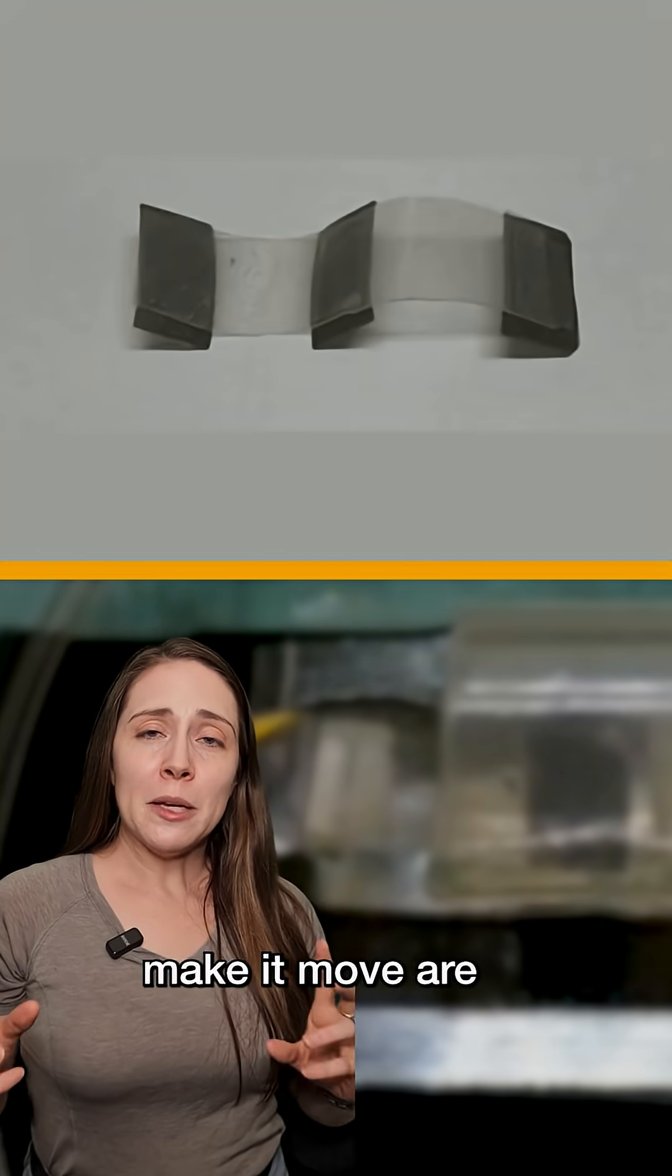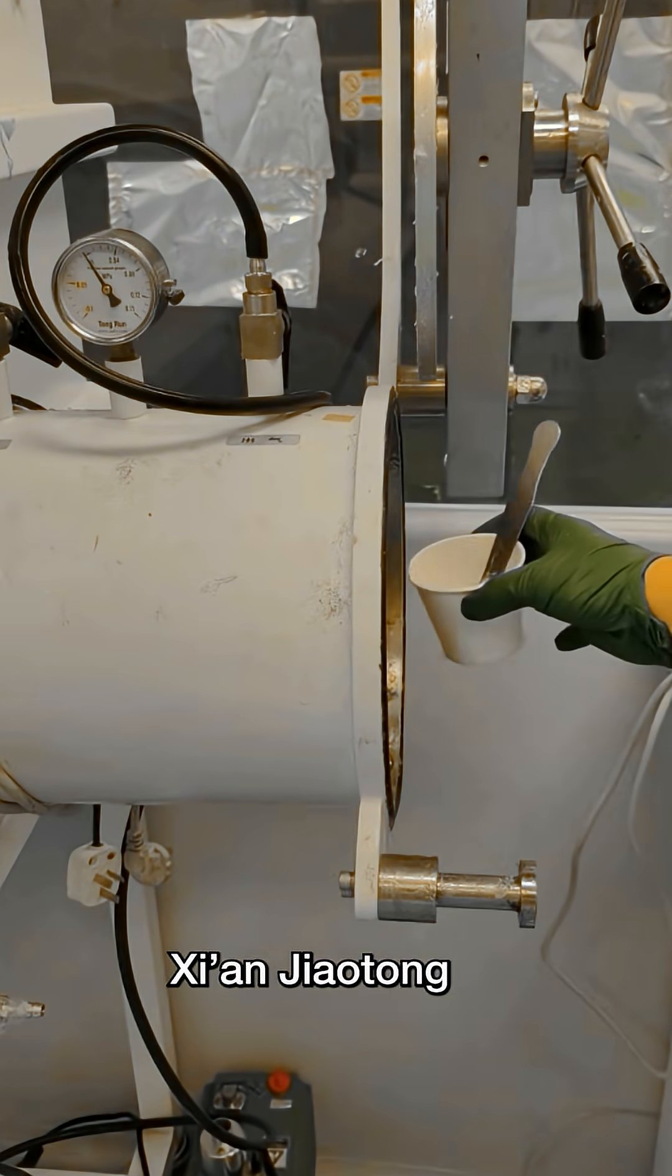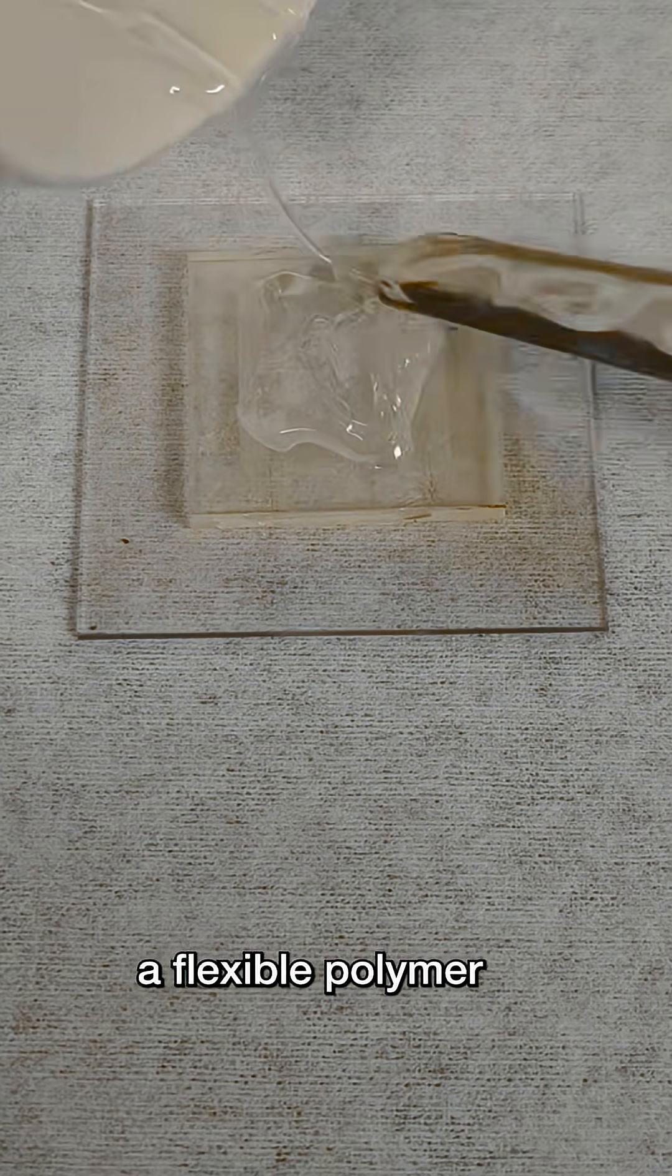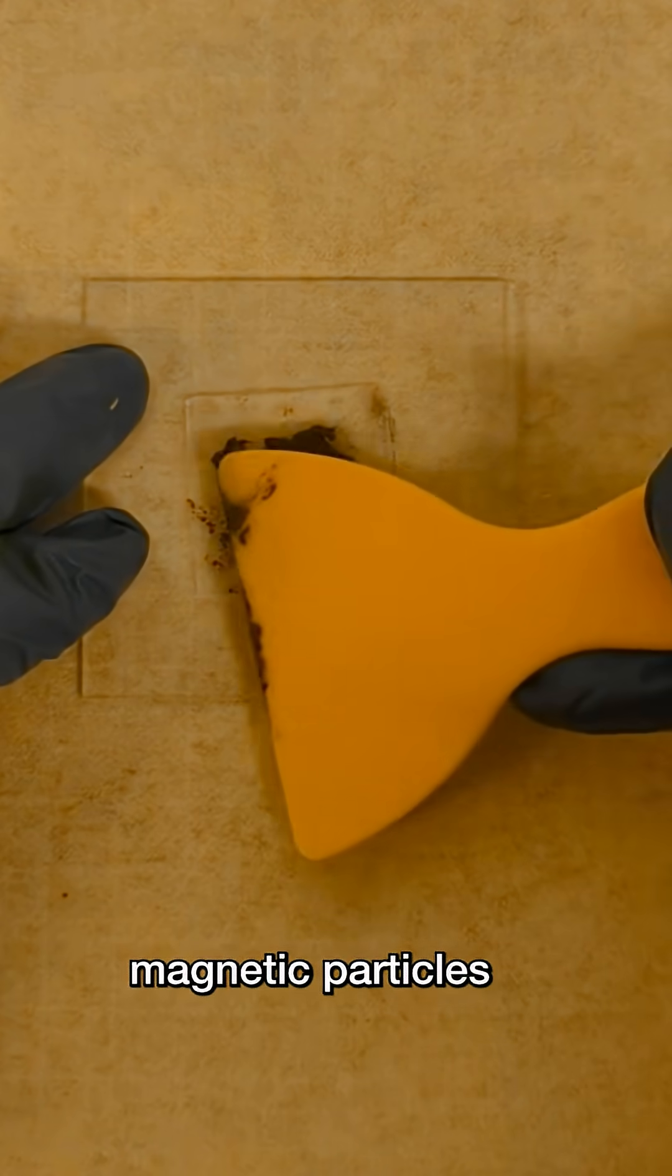The parts of a robot that make it move are called actuators. To create the actuators for the crab, researchers at Xi'an Jiao Tong University molded a flexible polymer film to have teeny tiny holes in it. Then they filled the holes with solid magnetic particles,